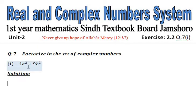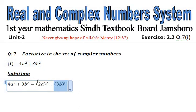And part number 1 is 4a² + 9b². So how can we factorize 4a² + 9b²? First of all, if we write it as (2a)² + (3b)², we can easily see that if we simplify, we can get 4a² + 9b².